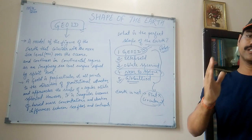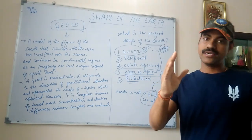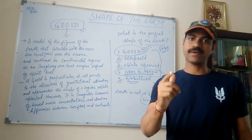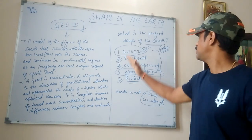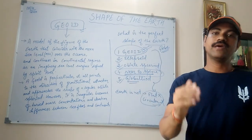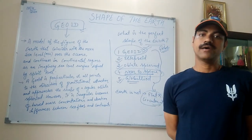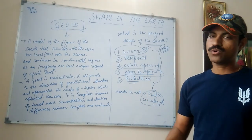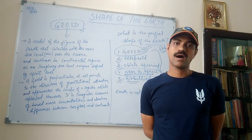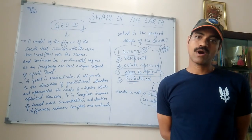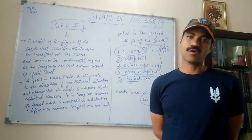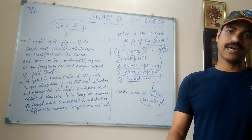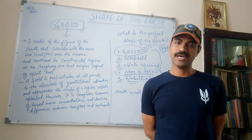Remember that all of these are correct shapes of the Earth. Geoid is the correct and most precise shape. Oblate Spheroid is also a correct shape. Globoid is a correct shape. All these shapes are very near to a sphere. Please subscribe to this channel for new topics. Bye.